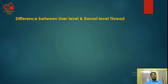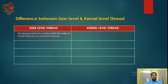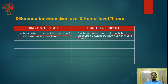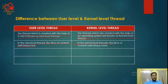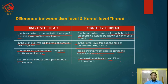What are the differences between user-level threads and kernel-level threads? A thread created with the help of a user is known as a user-level thread. In user-level threads, the time for context switching is less, but in kernel-level threads, context switching takes much more time. The operating system cannot recognize user-level threads, but it can recognize kernel-level threads. User-level threads are implemented in an easy way, while kernel-level threads are difficult to implement.